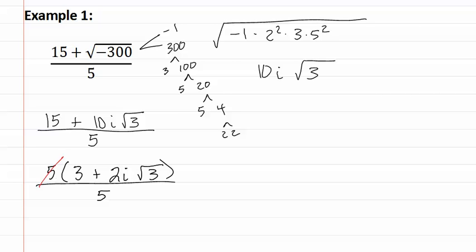Now we can reduce since they are being multiplied. This gives us our final answer of three plus two i root three.